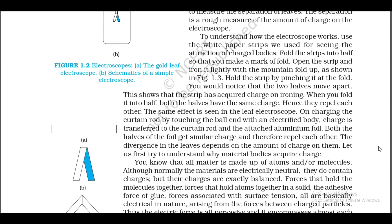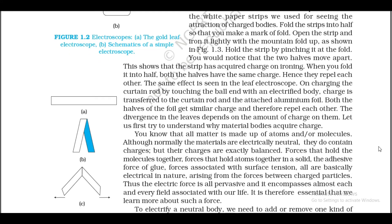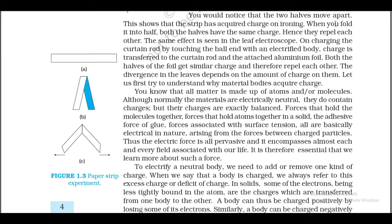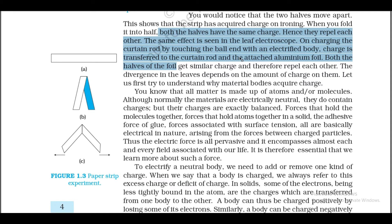The separation is a measure of the amount of charge on the electroscope. To understand how the electroscope works, use white paper strips. Fold the strips into half, make a mark of the fold, open the strip and iron it lightly with the mountain fold up (Figure 1.3). Hold the strip by pinching it at the fold. You would notice that the two halves move apart — this shows that the strip has acquired charge on ironing. When you fold it into half, both halves have the same charge, hence they repel each other. The same effect is seen in the leaf electroscope: on charging the curtain rod by touching the ball end with an electrified body, charge is transferred to the curtain rod and the attached aluminum foil. Both halves of the foil get similar charge and therefore repel each other.